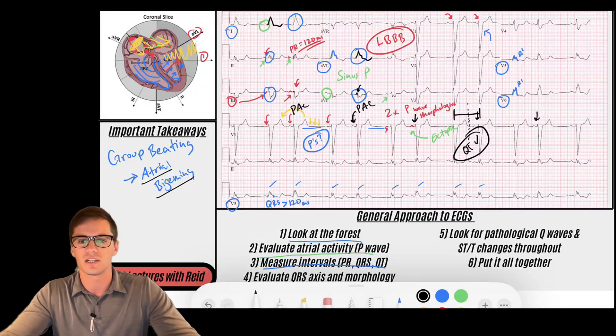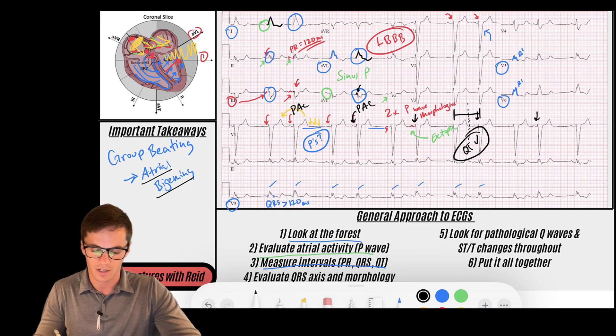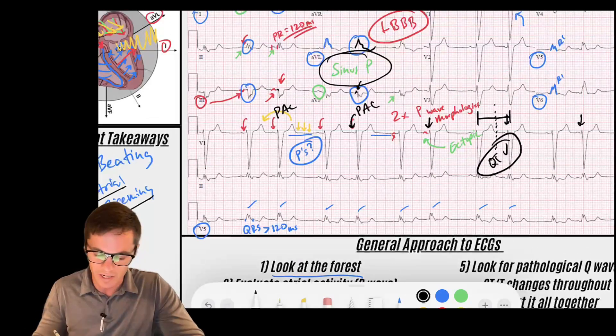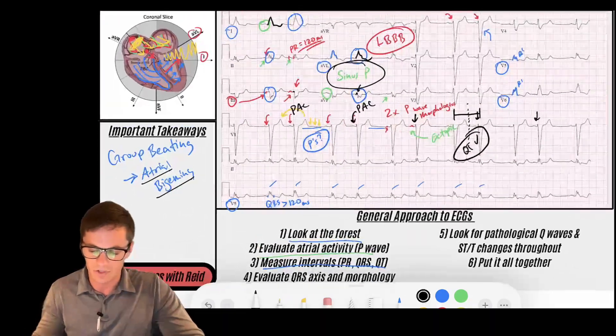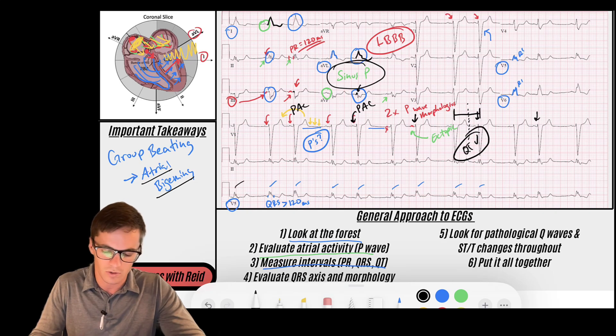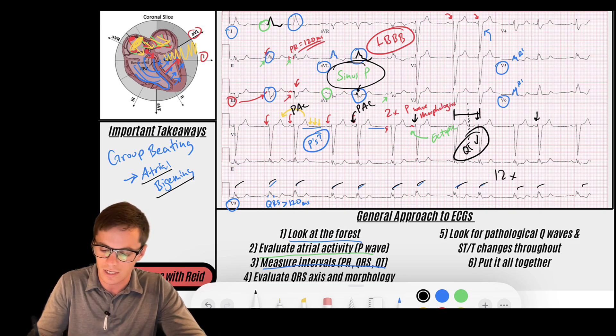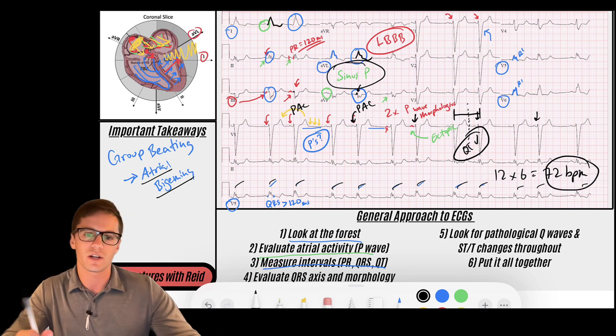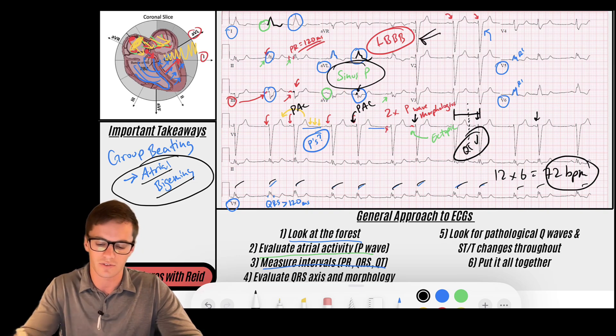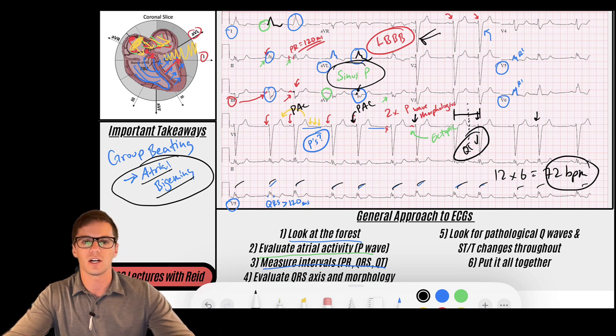Let's put this all together and what do we get? We get a sinus rhythm. I guess I didn't even do the rate, let's do the rate. Our rate here is, sometimes whenever you have bigeminy every little bit's a little different. You can count all of the beats on this strip - it's a 10 second strip, multiply by six. Let's just do that for ease: one, two, three, four, five, six, seven, eight, nine, ten, eleven, twelve. So 12 times six is 72 beats per minute. I'm sure that's not exact but we're in the ballpark. So we've got a rate of 72 beats per minute, we got a sinus rhythm with atrial bigeminy and a complete left bundle branch block.